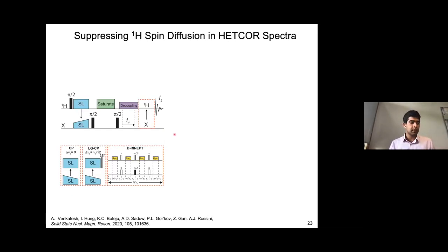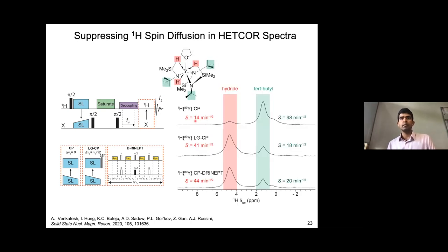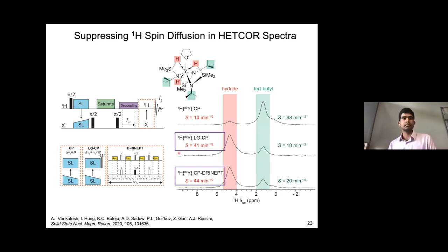To summarize the different approaches to suppress spin diffusion: you can use short CP contact times with a normal double CP, stick in an LGCP block, or alternatively use a DRNF block for the back transfer — since it is the back CP step after T1 that really matters when you want to suppress diffusion. On the compound shown, where the highlighted protons are really close in space to the yttrium, applying LGCP and DRNF in the back step enhances the sensitivity of those protons by about a factor of three, showing that we can really suppress the relay during the CP step.